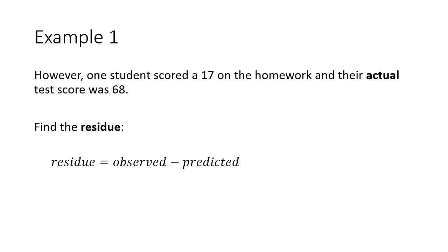However, if we go back to the table, there was a student who scored 17 on the homework, but their actual test score was a 68. The residual is going to be how far off the observed was from the predicted. We take the observed, which was 68, and subtract what the line predicted.